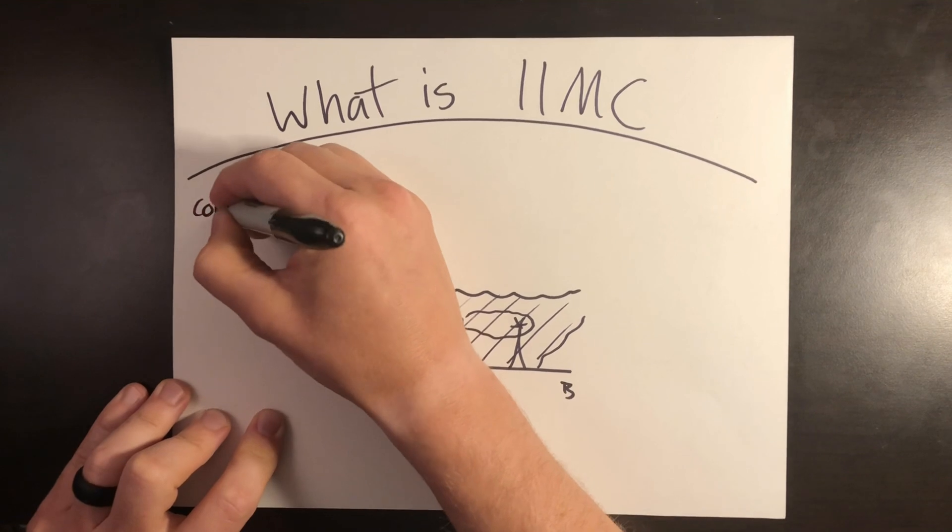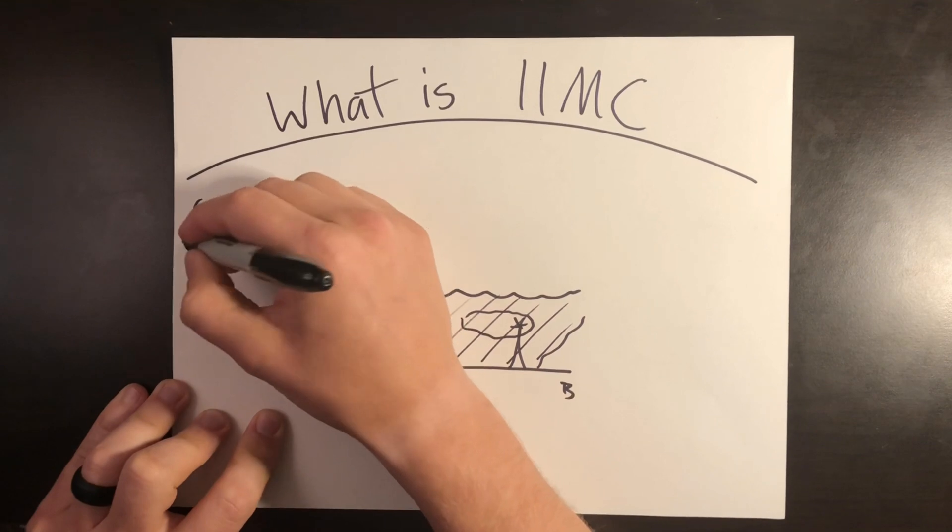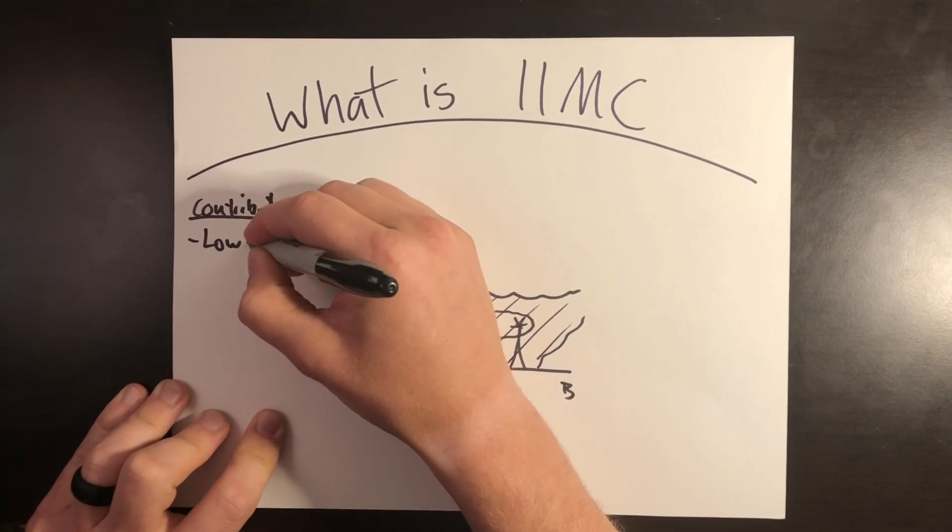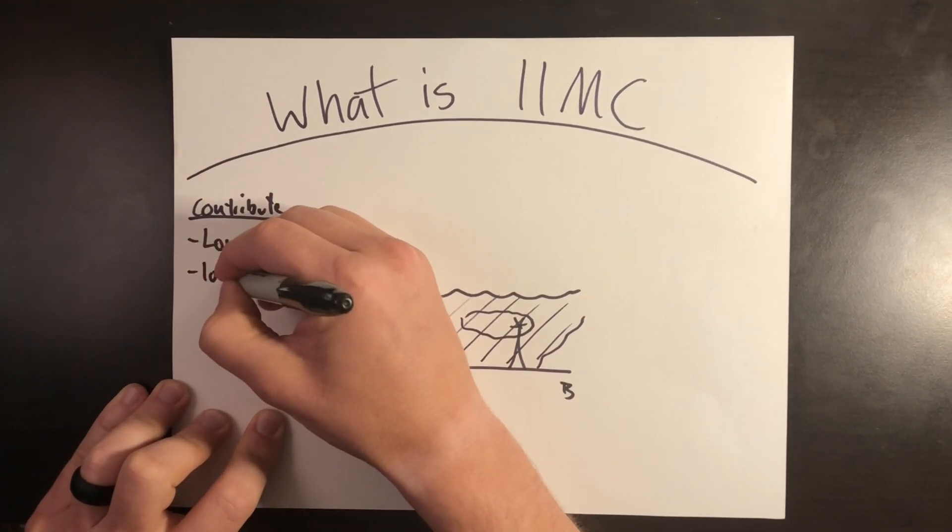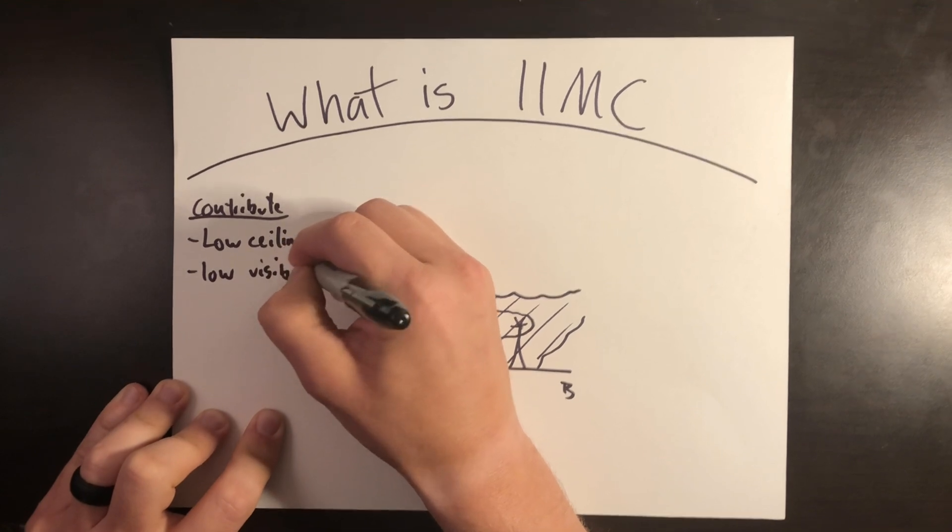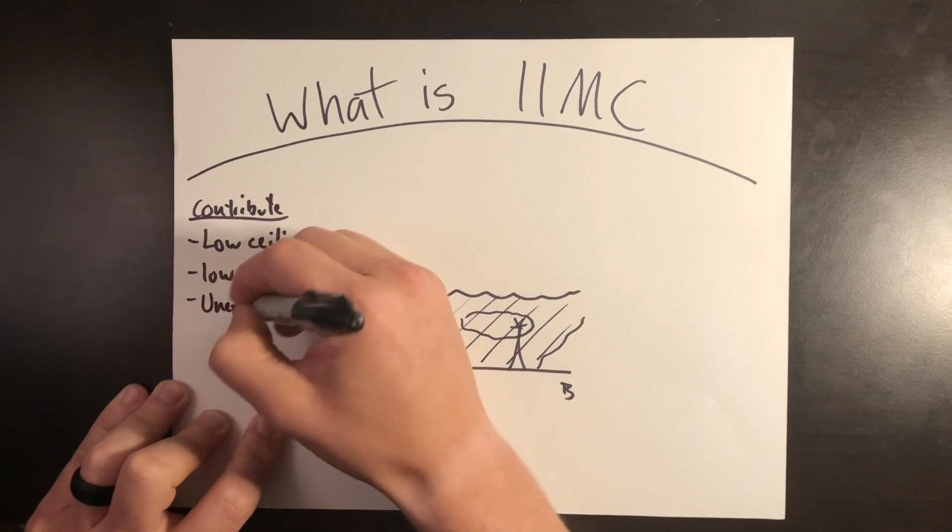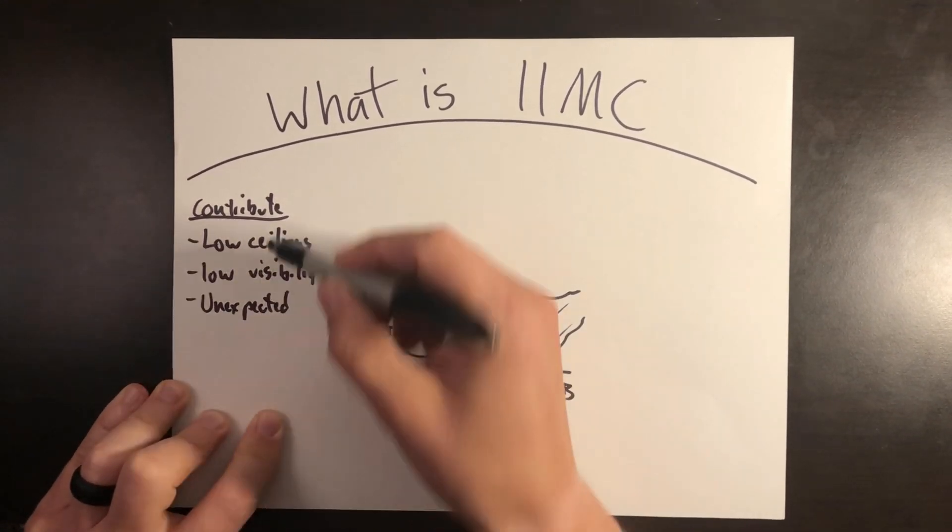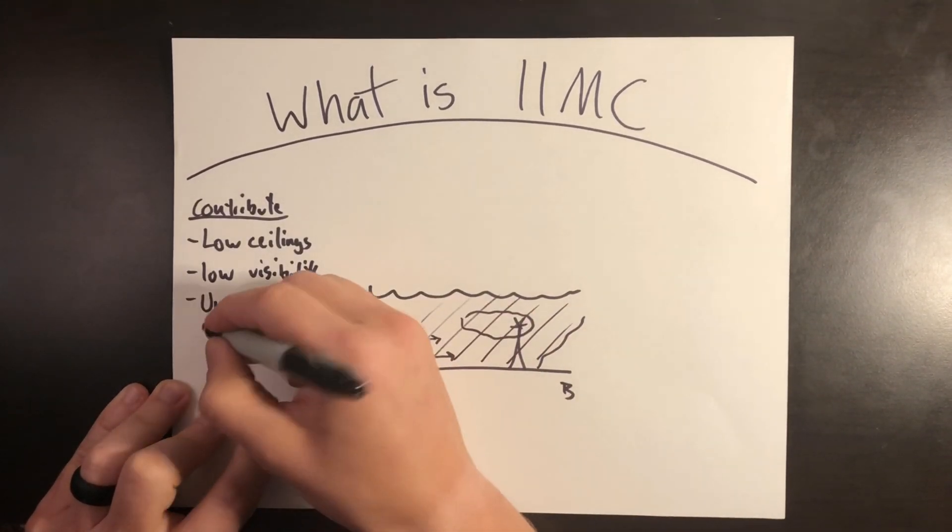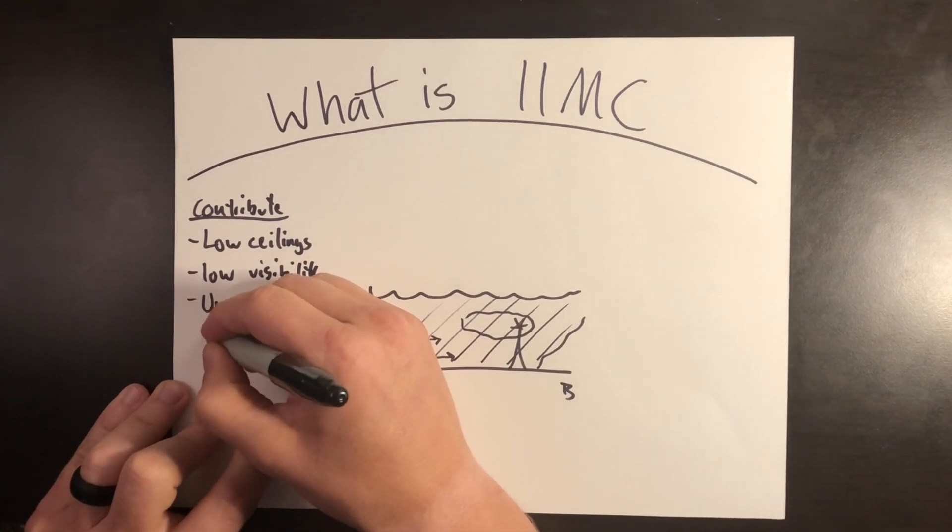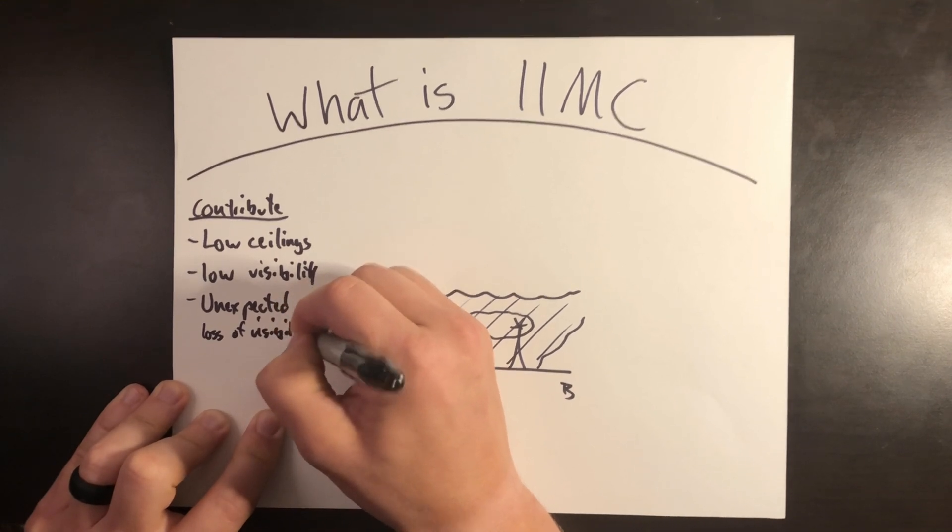So the things that kind of contribute to this situation are one, low or degrading ceilings. Another one is low or degrading visibility. And then what happens is there's an unexpected event. All of a sudden now these two things have caught up to you. You've had unexpectedly gone into the clouds or unexpected loss of visibility and it's not coming back or it's very unlikely to come back.